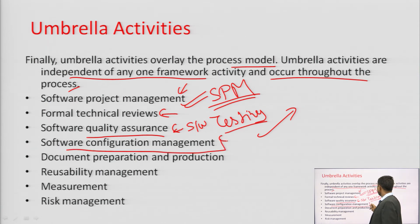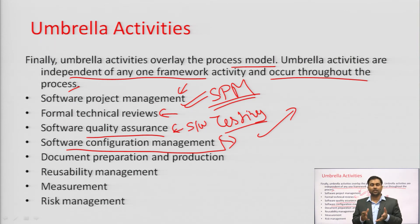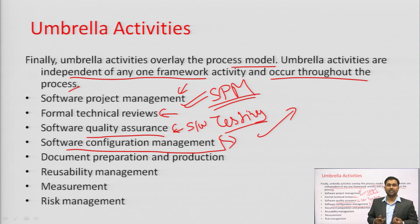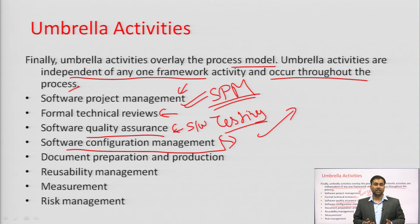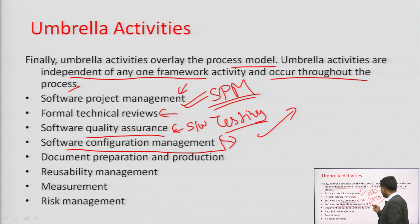Software configuration management — configuring software means ensuring the system meets the required configuration. For example, VLC's hardware requirements: if a heavy game requires 8 GB RAM, it won't run on 1 GB — there will be issues. Some software runs only on particular browsers. All software should be run and tested for compatibility issues. This is compatibility testing and is part of configuration management.